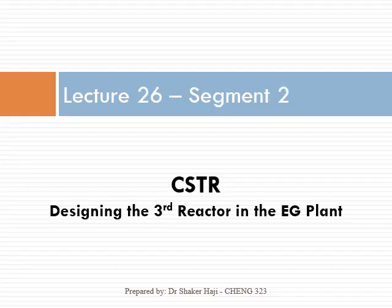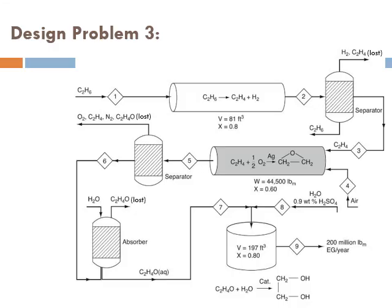Welcome to segment 2 of lecture 26. We're going to design the third reactor in the ethylene glycol plant — a CSTR. The ethylene oxide produced here exits through a separator to remove unconverted oxygen, unconverted ethylene, and nitrogen coming from air. Unfortunately, we also lose some of the ethylene oxide. Our main stream will be the ethylene oxide.